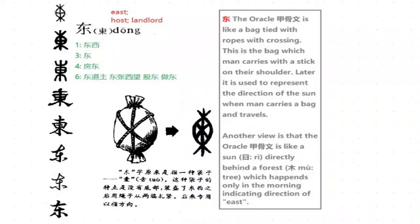Chinese character evolution — 漢字演变. Today we are going to talk about character 东, meaning East.